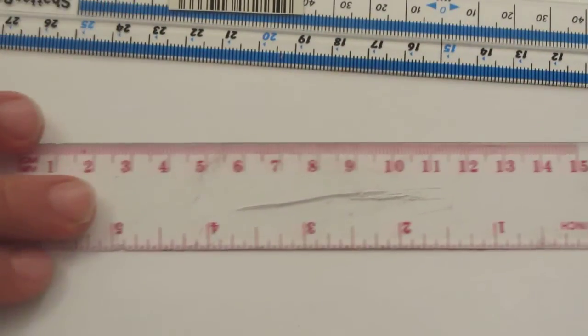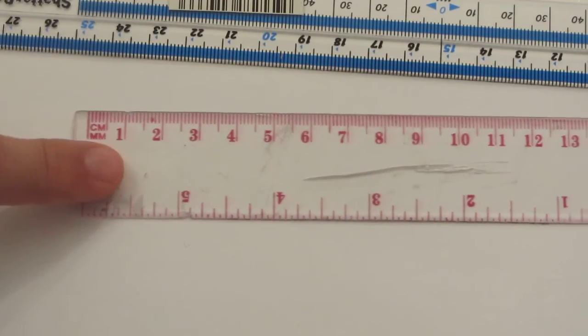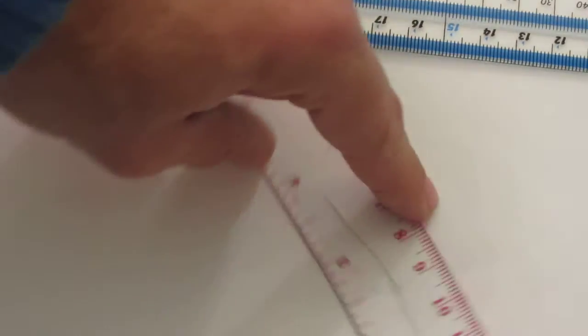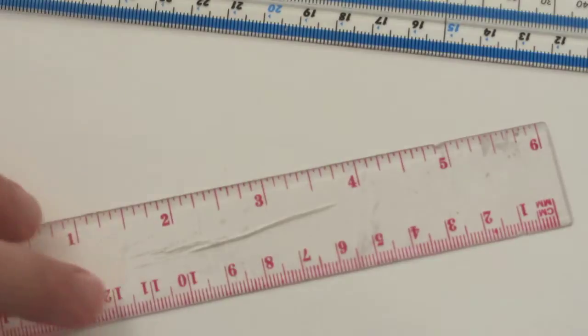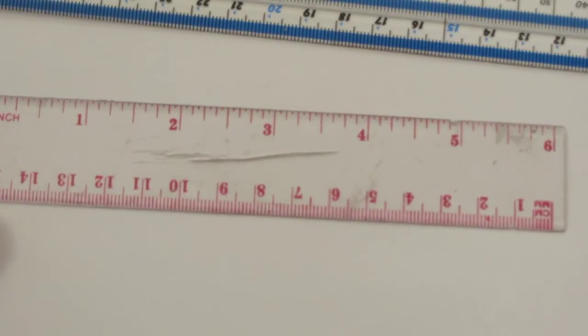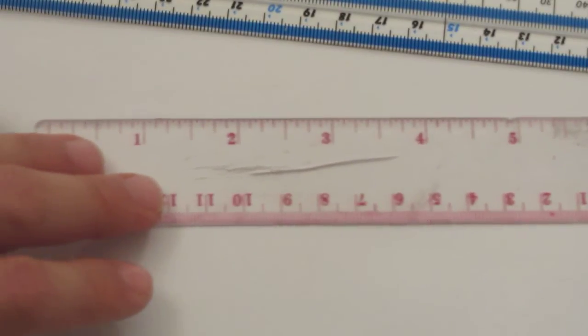And then we've got the fifteen centimeter ruler, which you can probably appreciate if it's half of thirty centimeters, then it's going to only be a six-inch ruler. It's going to be half of twelve inches.